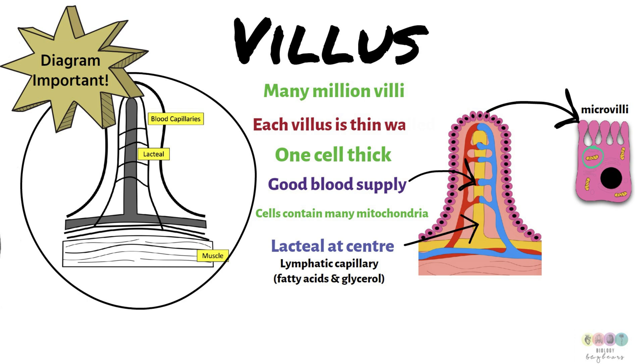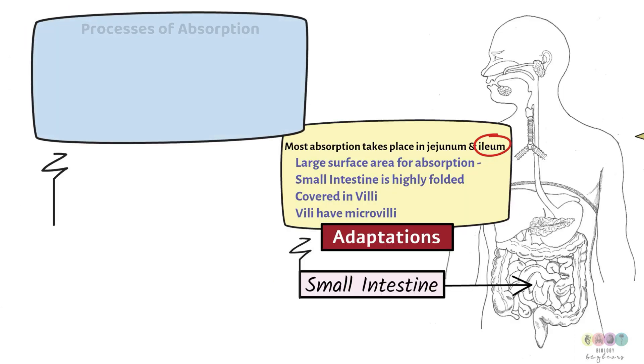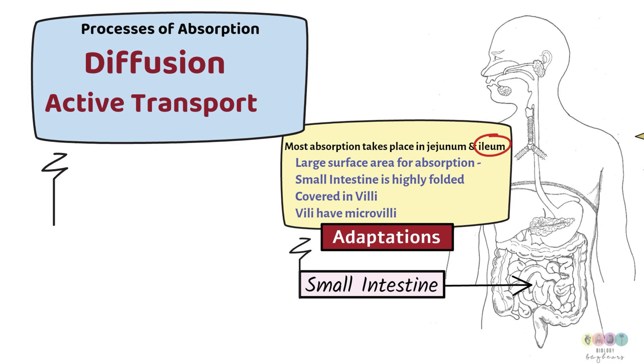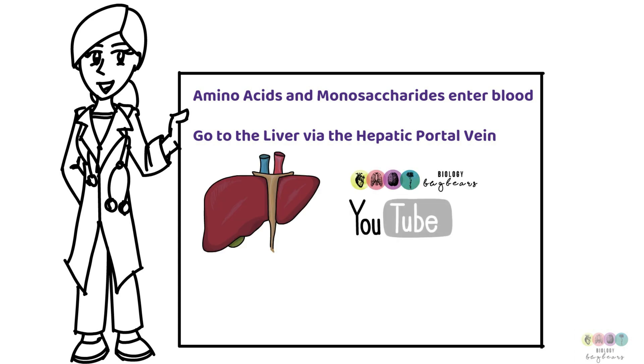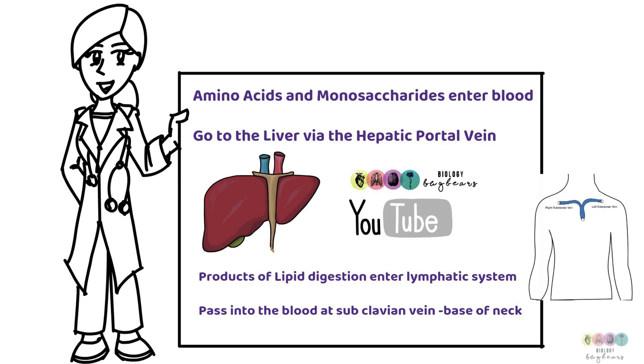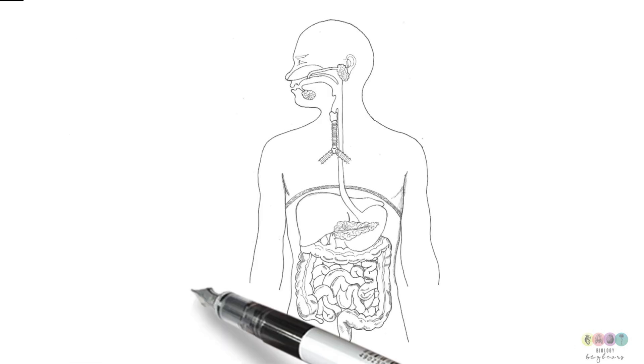When those products of digestion are being absorbed, it means they're leaving the small intestine. They're passing through the walls of the villi. This happens by two processes, diffusion and active transport. It just depends on the substance. The amino acids and monosaccharides will enter the blood and go to the liver via the hepatic portal vein. And there's a video on the functions of the liver that I recommend you watch. The products of lipid digestion, well, they enter the lymphatic system and they pass into the blood at the subclavian vein at the base of the neck, the left subclavian vein.